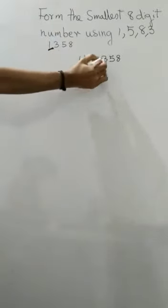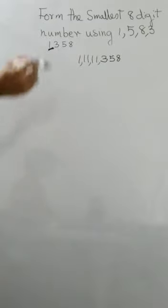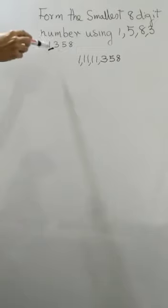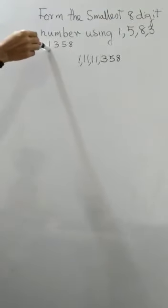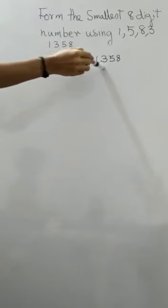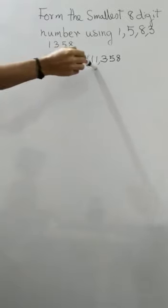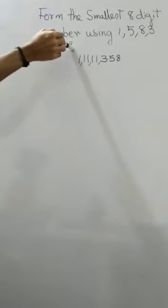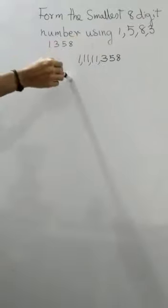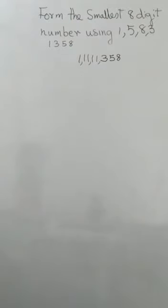So you have formed the 8 digit number. Then you will put the commas like this. You are using the smallest number the maximum number of times to form the smallest number — using 1 five times. Then you write the other numbers also: 3, 5, 8 at the end. This will be the smallest number you can form using this set.